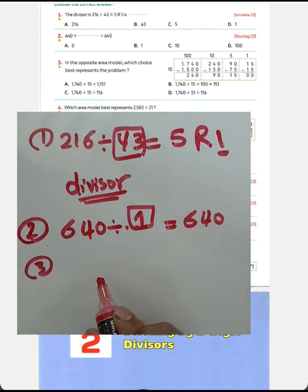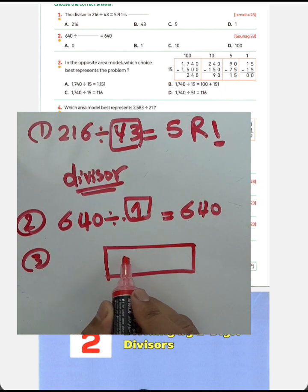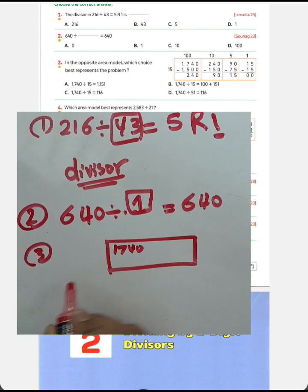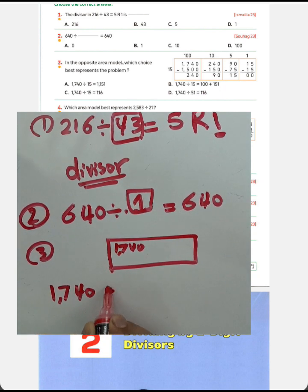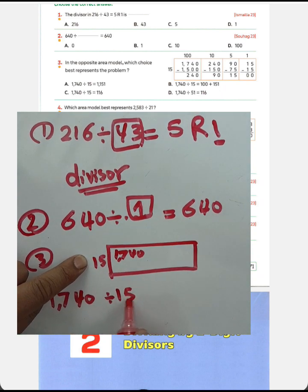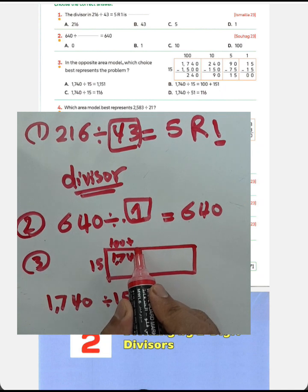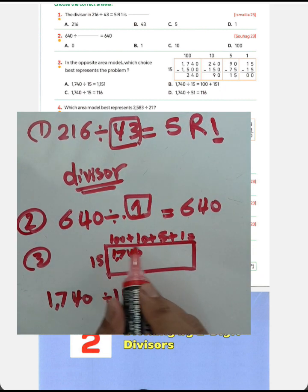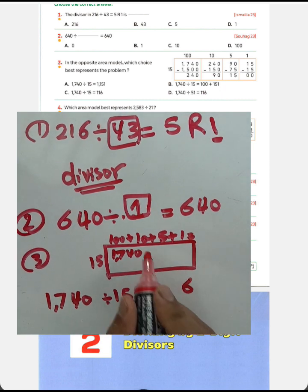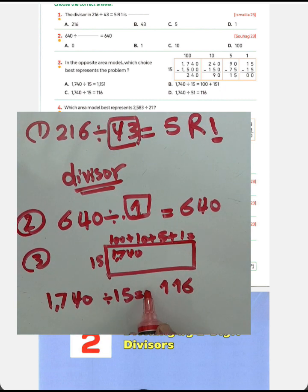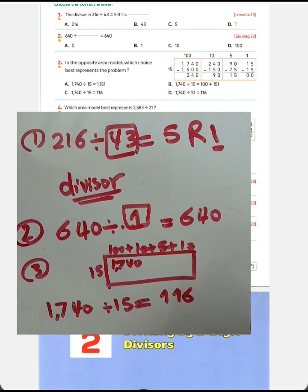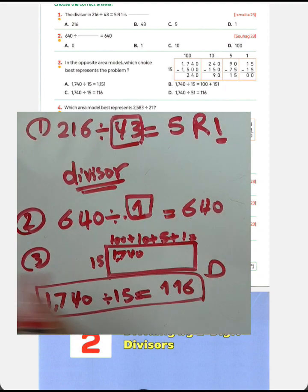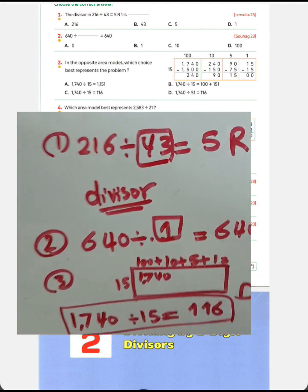For question number 3, look at this number — we call this the dividend. The dividend here is 1740. So 1740 divided by 15 gives a quotient of 100 plus 10 plus 5 plus 1. That gives us 116, and we have no remainder here. Choose letter D for question number 3.